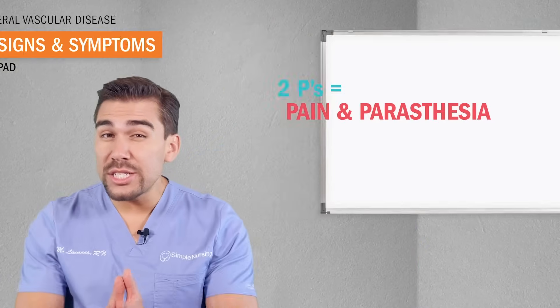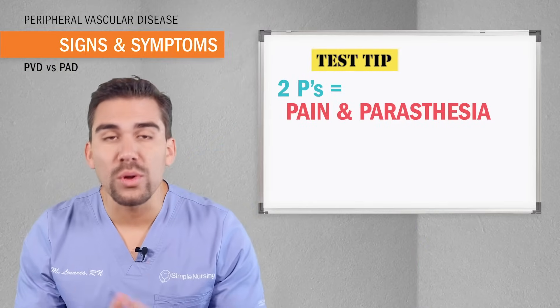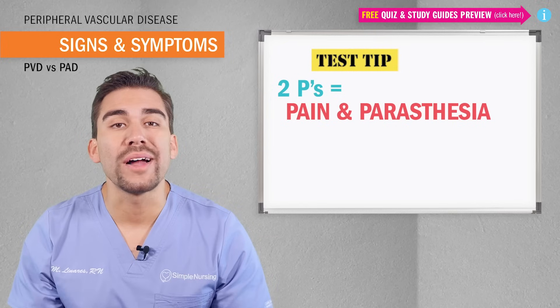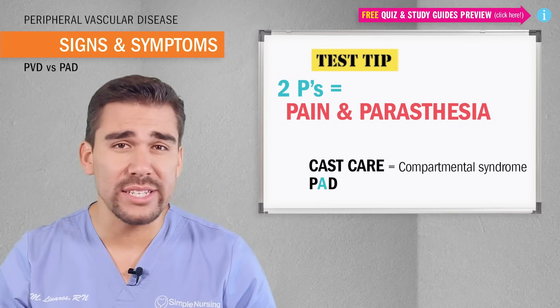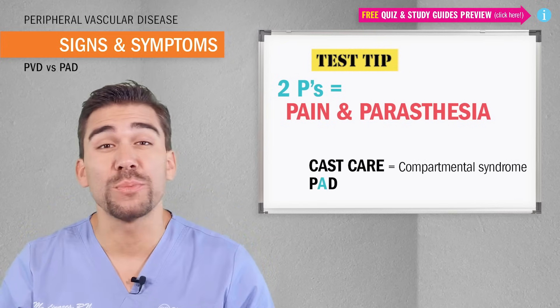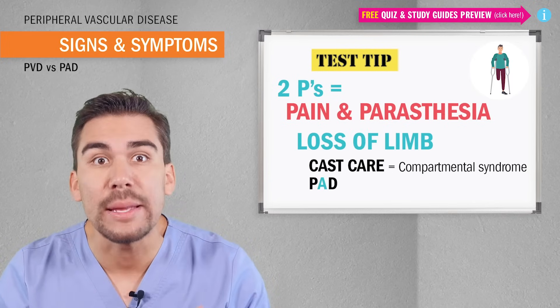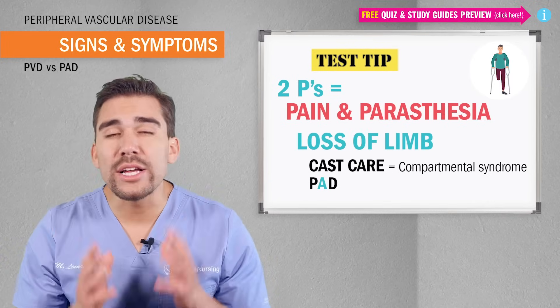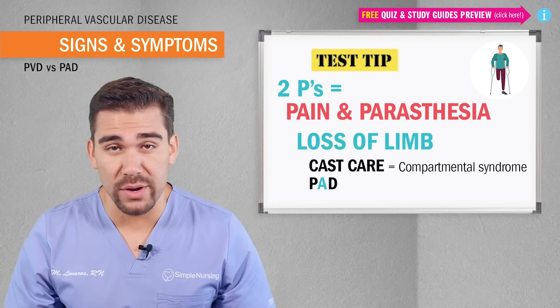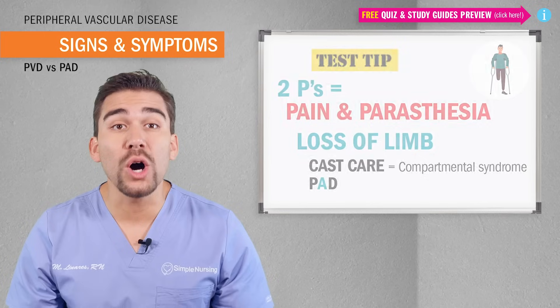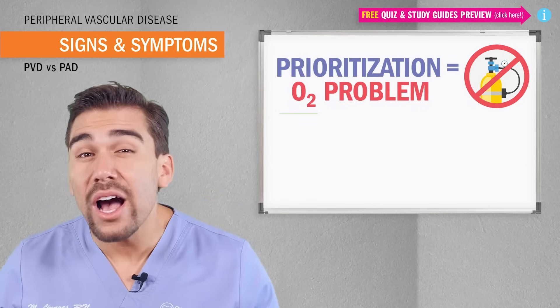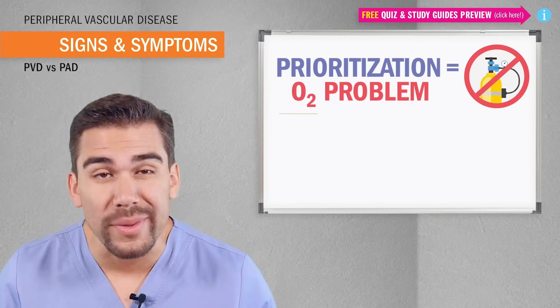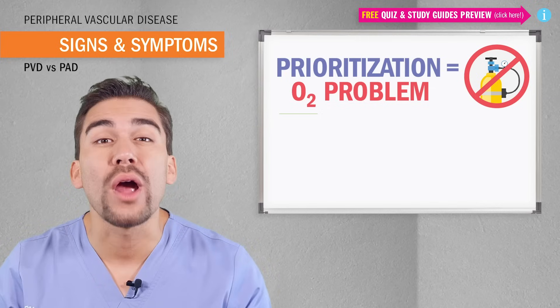A little side note for your future exams: these two Ps are always the priority and will always show up on NCLEX and even PAD questions. In both cases we have an oxygenation problem leading to a loss-of-limb problem. We always think of the worst-case scenarios here, which always revolve around oxygen problems. Any oxygen problem is an emergency and is always a priority.